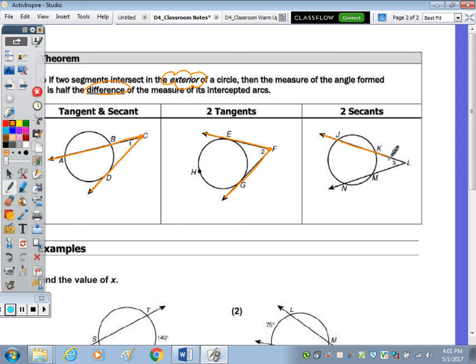And then here we have two secants, and they intersect at L, which is outside the circle. So the theorem, it said it's half the difference of the measure of its intercepted arcs.